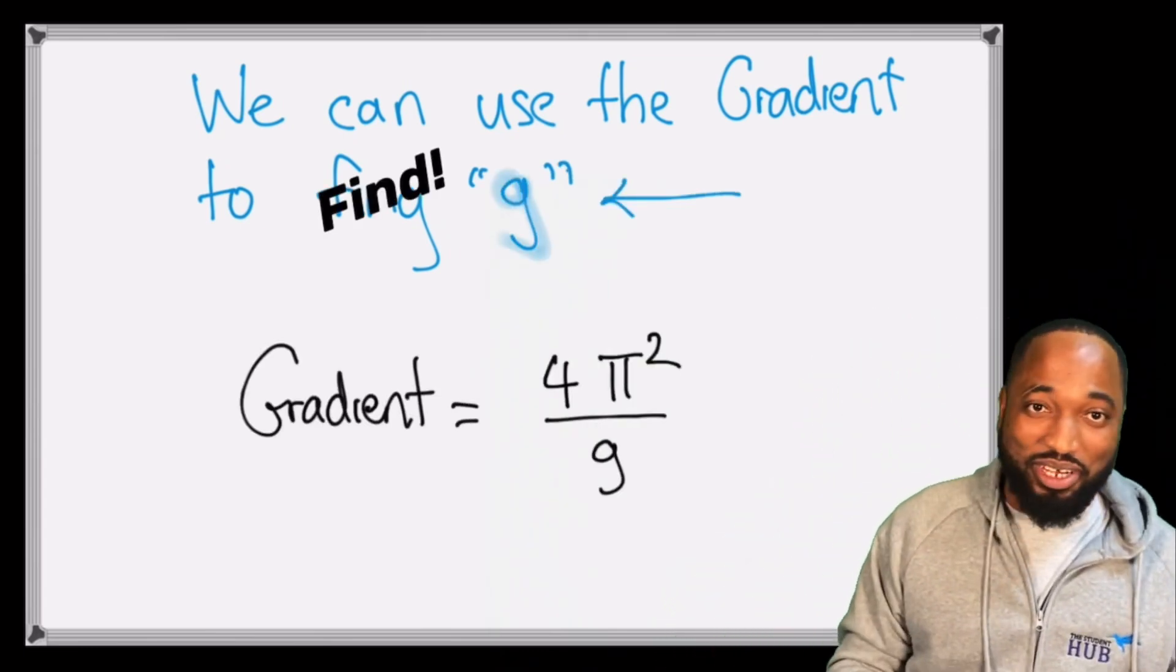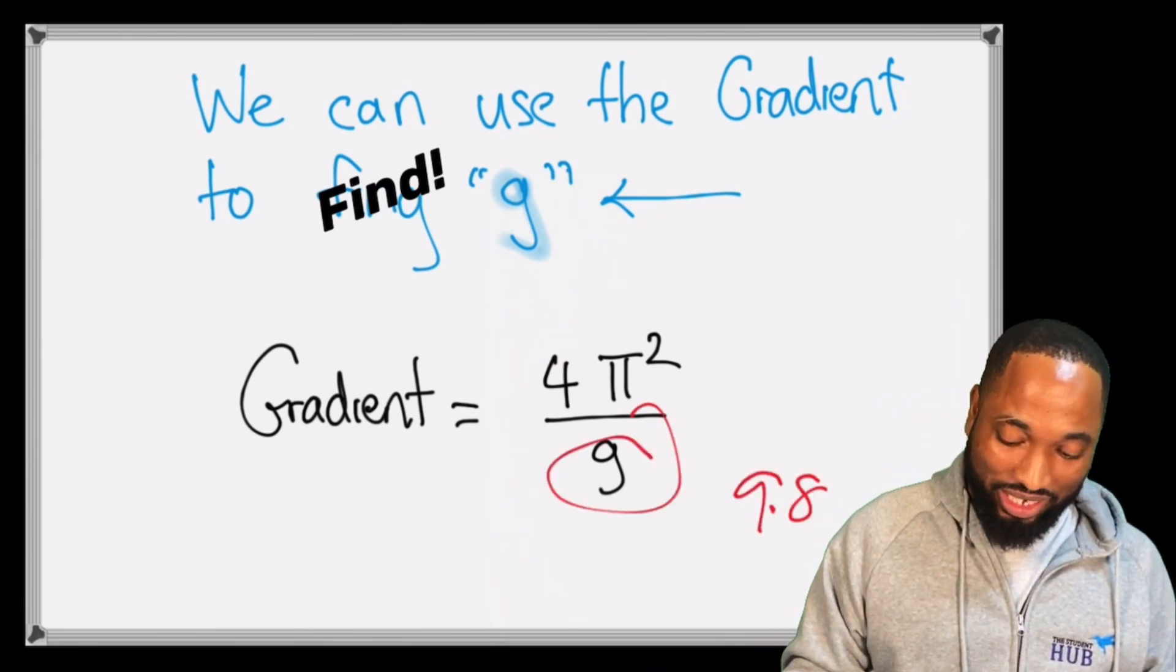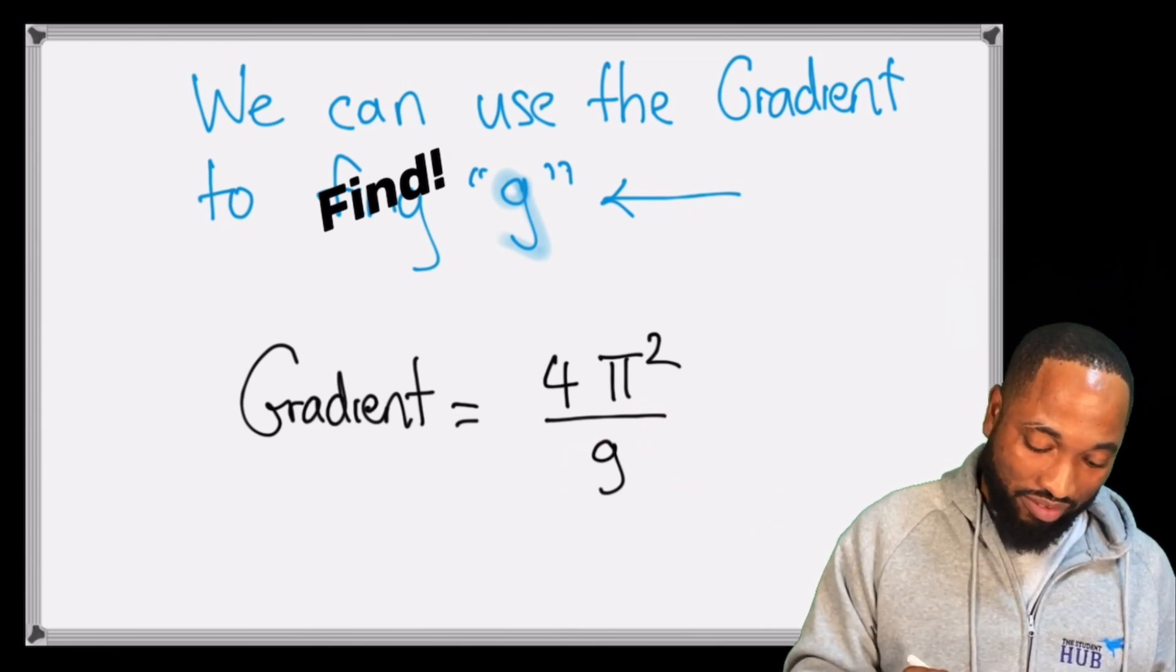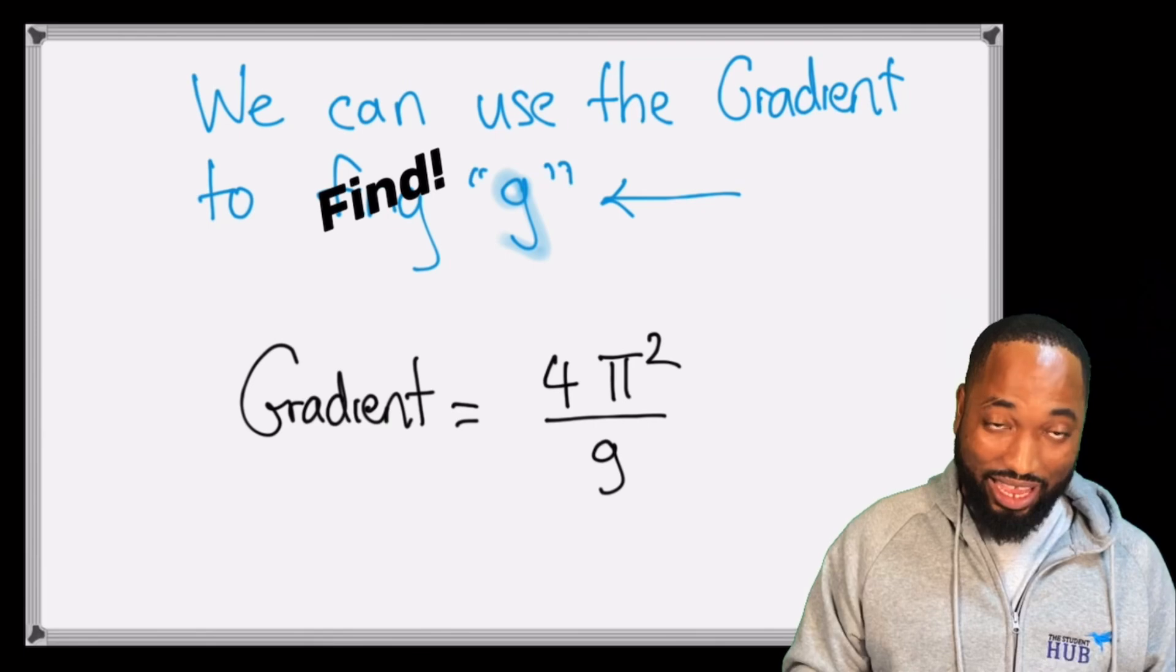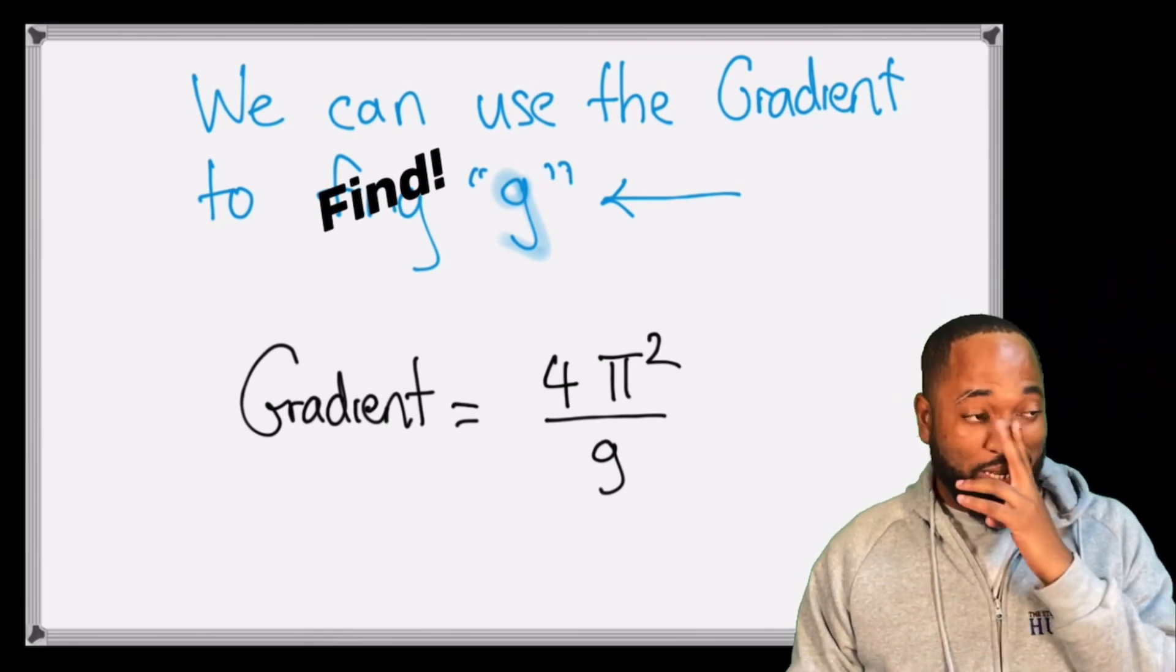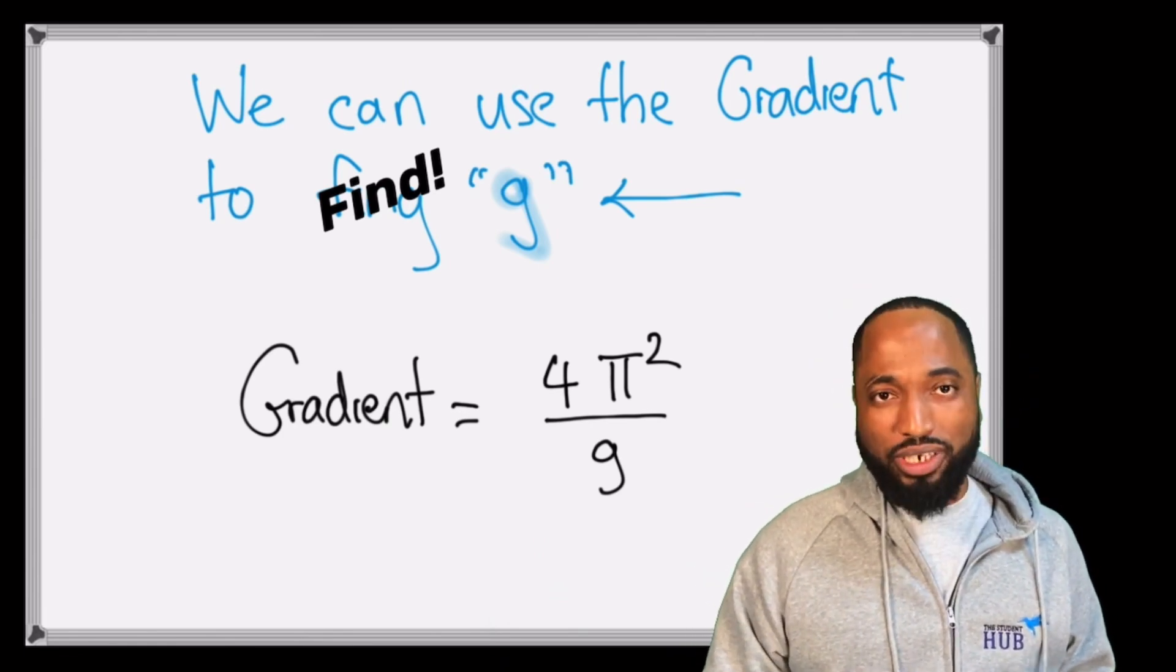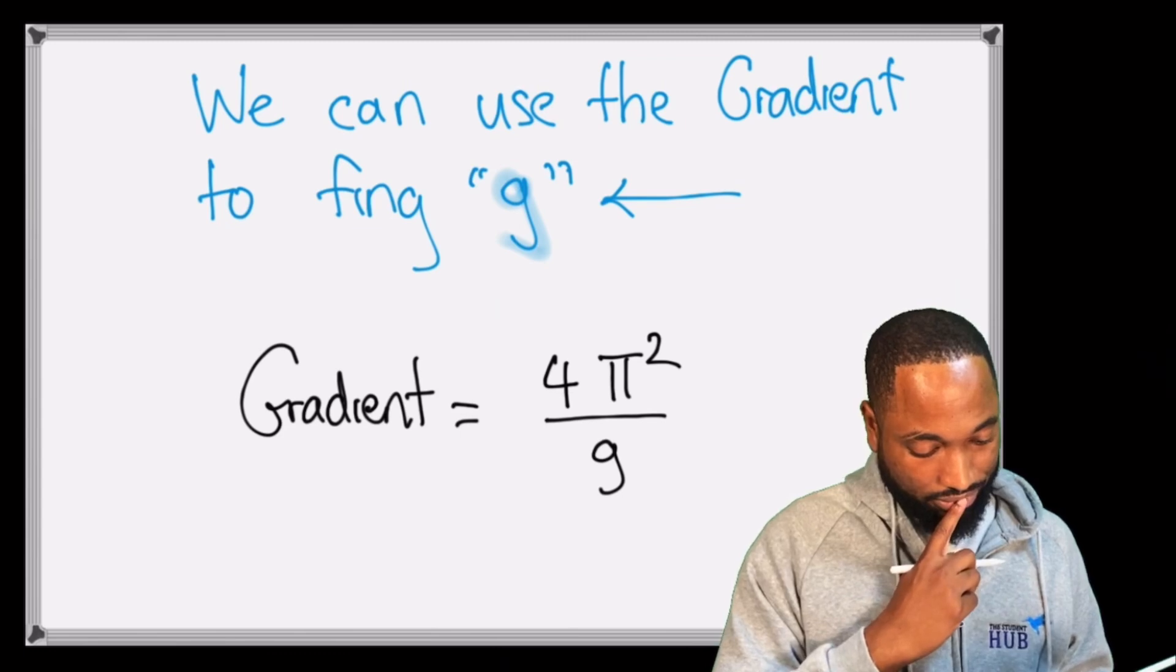So your gradient of your graph is supposed to be equal to 4π² divided by 9.8 when you do this lab. If you don't get g to be - if you get g to be 9,000 or some kind of thing, you immediately know you're going around 9.8 meters per second squared.